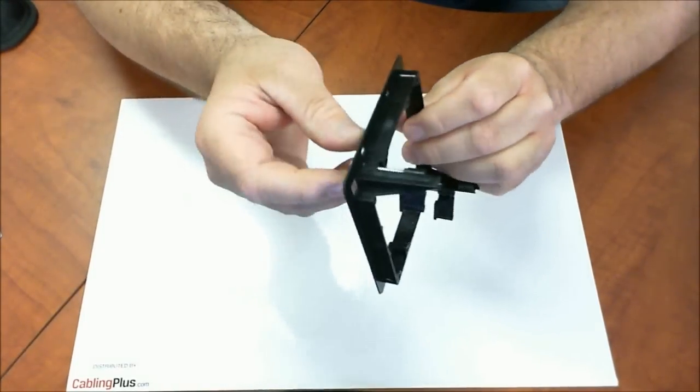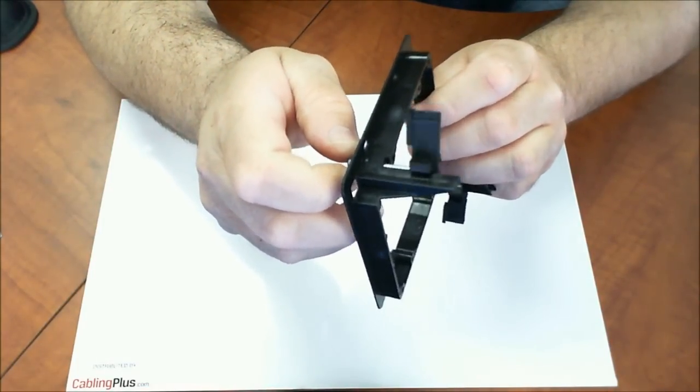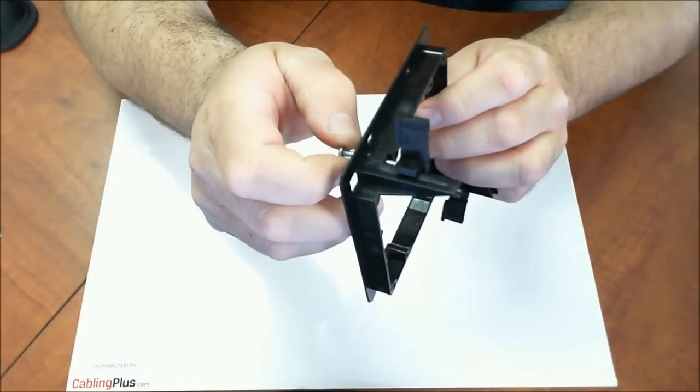Once you put it in, you're going to use these screws with the bat wings here. It's these little wing tabs, and what you're going to do is screw those down. It's going to make it really snug against the wall.